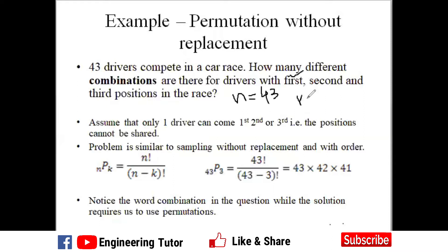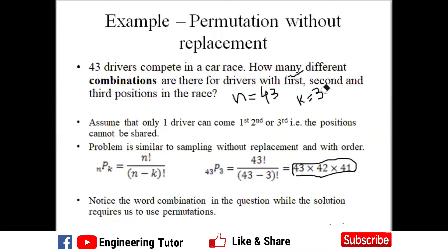This is a permutation problem because the positions first, second, and third are distinct and ordered. So n equals 43 and k equals 3. You want to find the total number of ways of arranging three drivers in order from 43, and the answer is given by the permutation formula. Notice that the question uses the word 'combination,' but from context you must deduce that permutation is required — this tests your conceptual understanding.